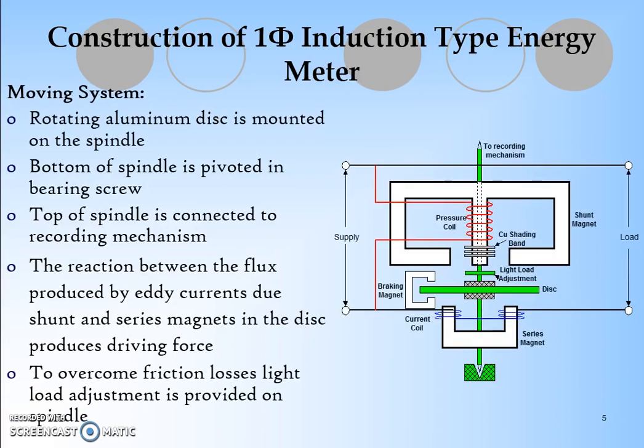Next is the moving system, shown in green. It shows how the disc is going to rotate. The rotating aluminum disc is mounted on the spindle. Bottom of spindle is pivoted in the bearing screw. Top of the spindle is connected to the recording mechanism which has gear trains. We can easily see this in analog meters.